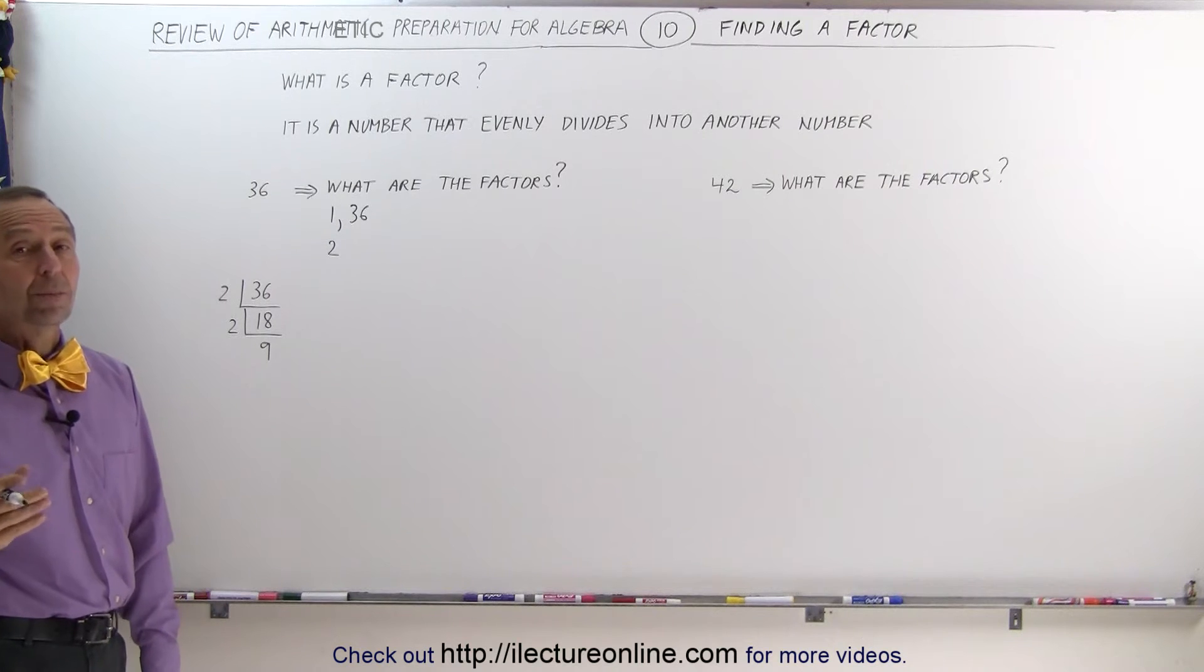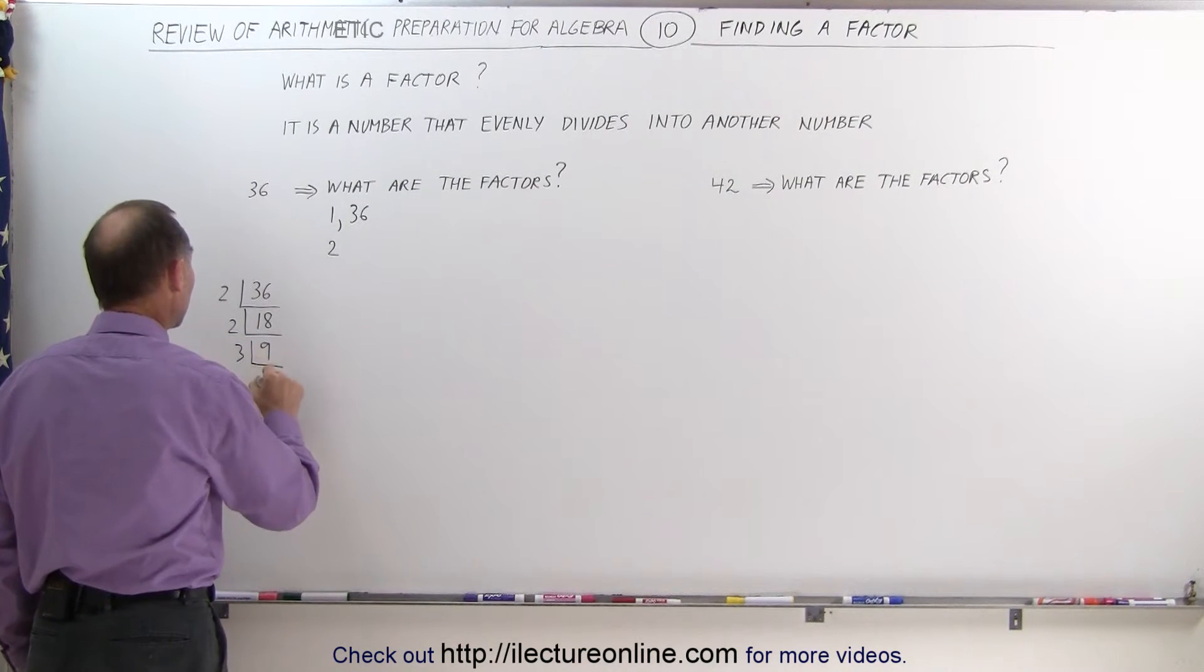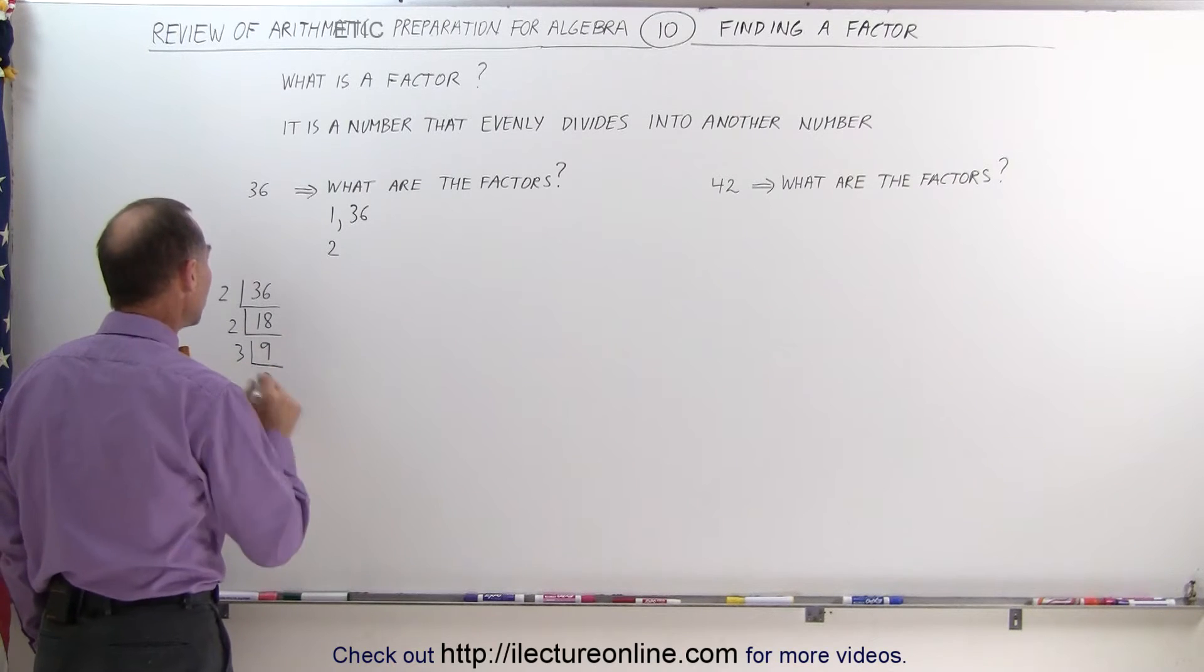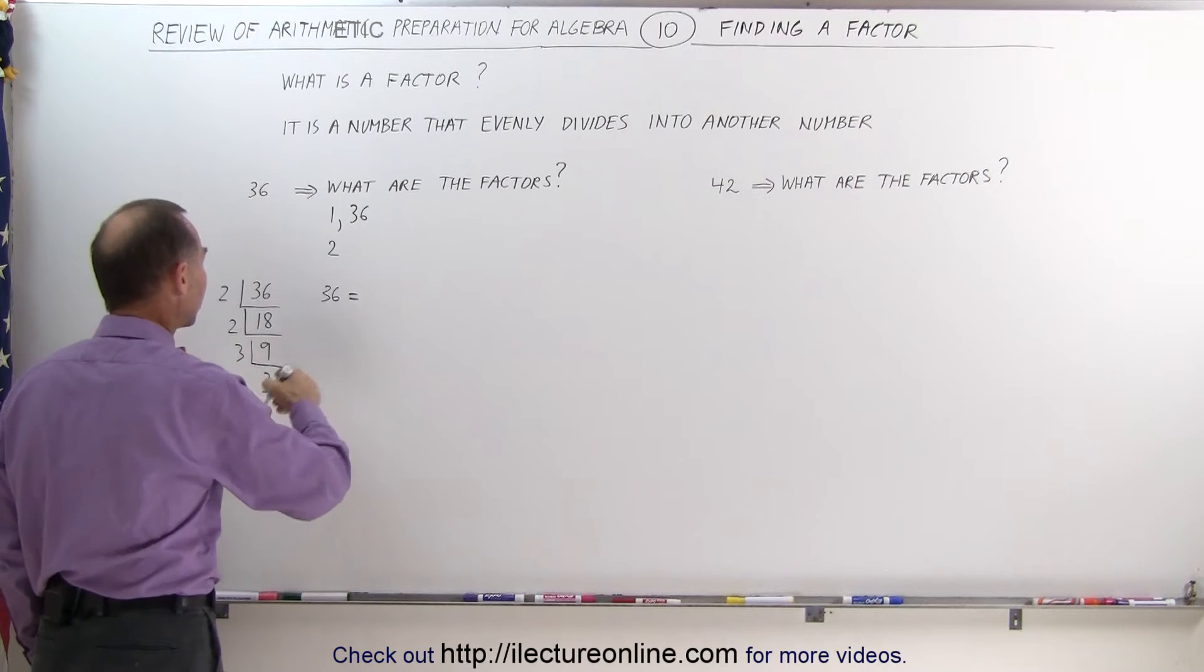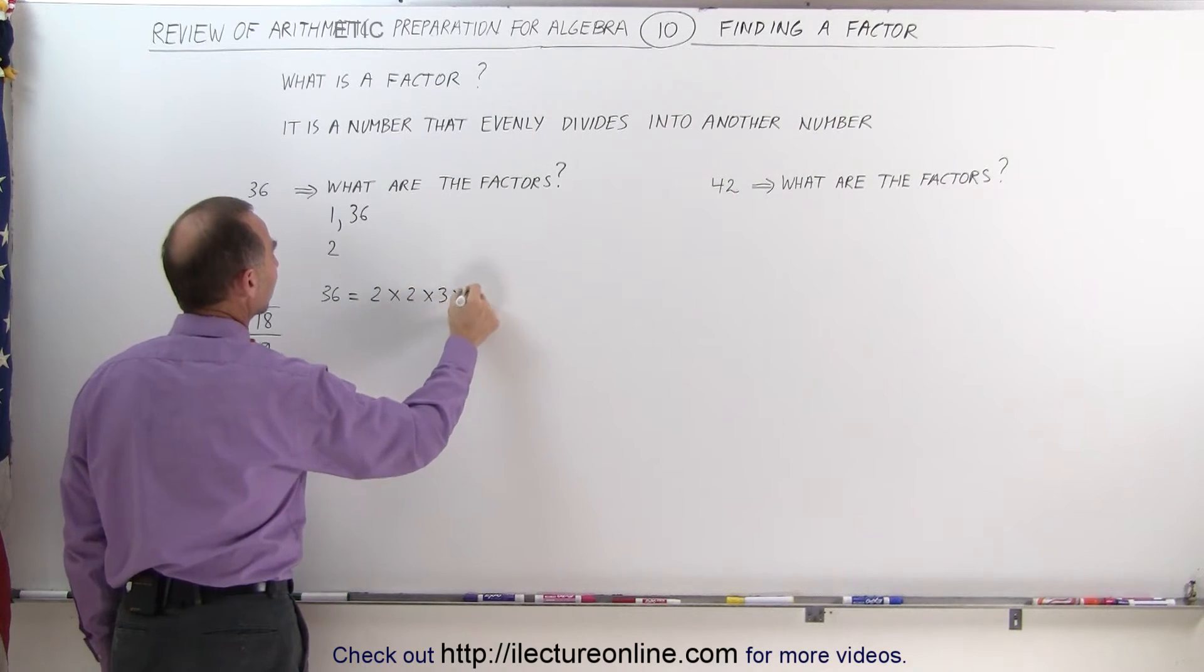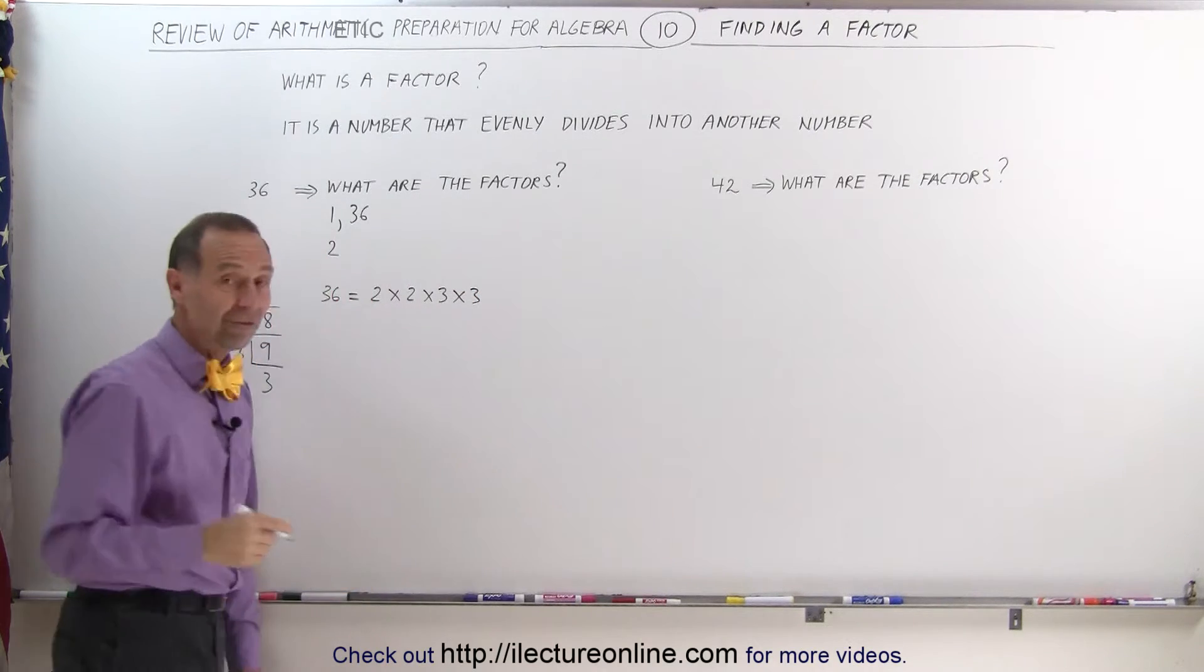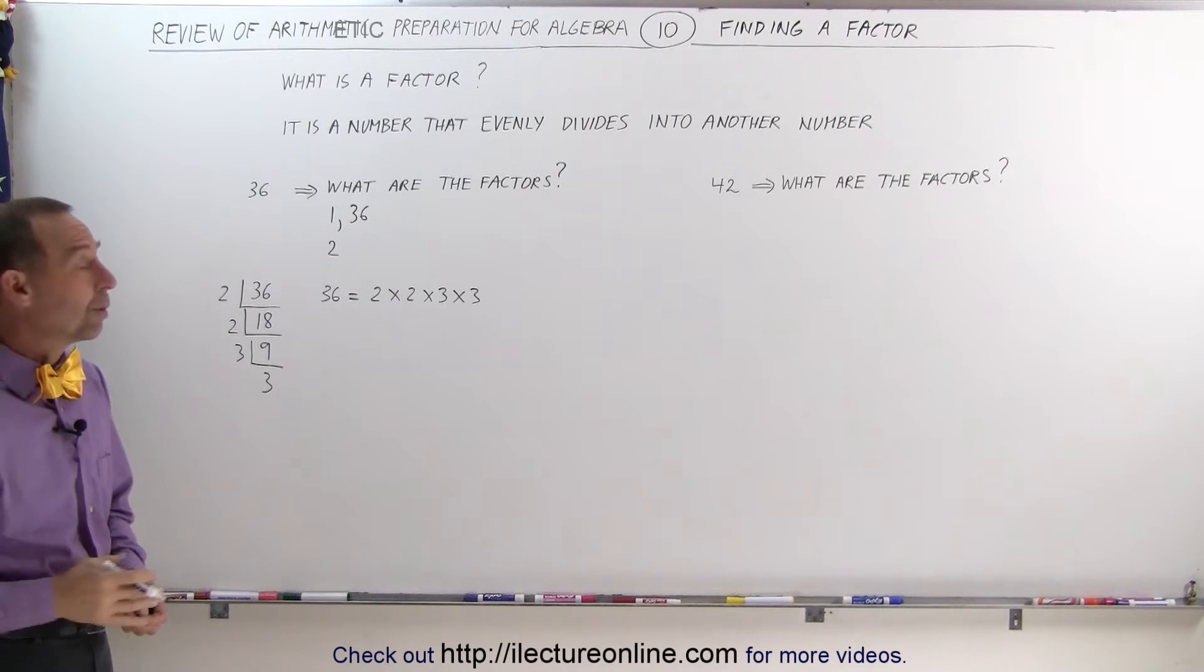The next smallest prime number would be 3. That means we can divide 9 by 3. When we do that, we get 3. Which means that 36 can be written as the product of all these factors: 2 times 2 times 3 times 3. And you can see that the factor 2 repeats. You have two of them. The factor 3 also repeats.